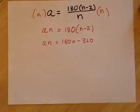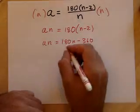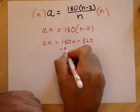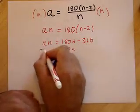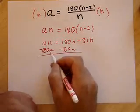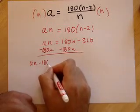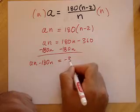I'm trying to solve for n, so I'm not quite sure what to do here. I might as well just get all the n's on both sides. So I'm going to subtract 180n from both sides. I might as well get the n's on one side. And what do I end up with? Let's see. I end up with An minus 180n equals negative 360.